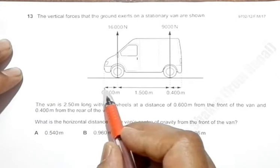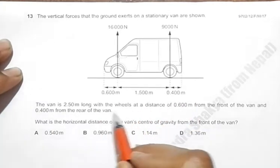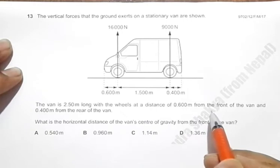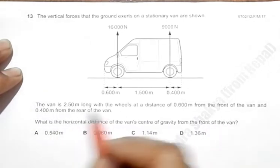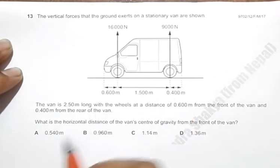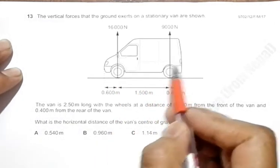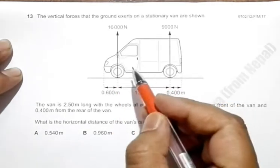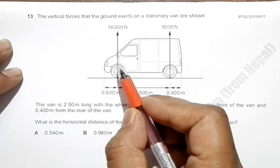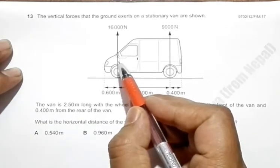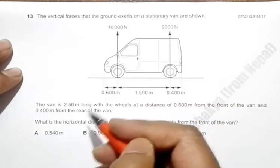The wheels are at a distance of 0.60 meters from the front and 0.40 meters from the rear. So we have to find the horizontal distance of the van's center of gravity from the front of the van. If we look at the diagram properly, the reaction here is more, which means the load or the weight of the van is more at the frontal side than the rear side.